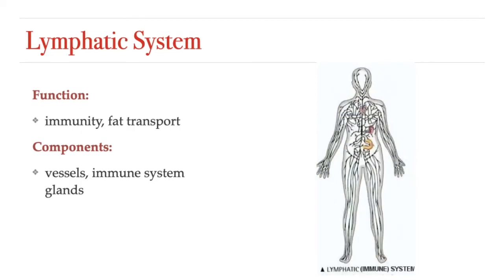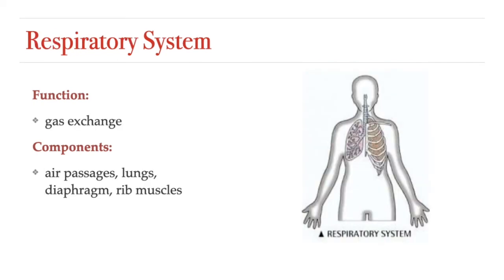The lymphatic system is a collection of lymph nodes, glands, and vessels that help regulate our body's defenses against invaders — in other words, our immune system. Its second function is the absorption and transport of fats and fat-soluble vitamins from the digestive system. The respiratory system is a group of passageways and organs that help us extract oxygen from the air that we breathe and to get rid of carbon dioxide that we produce as a waste product.